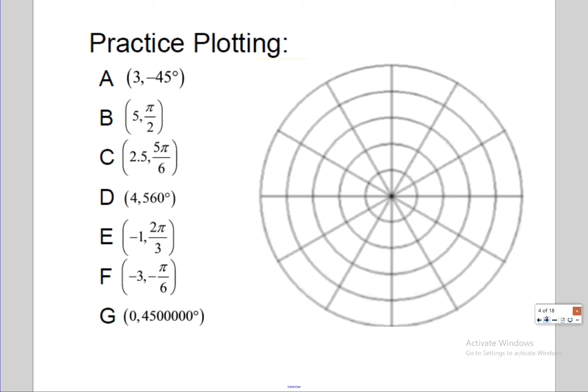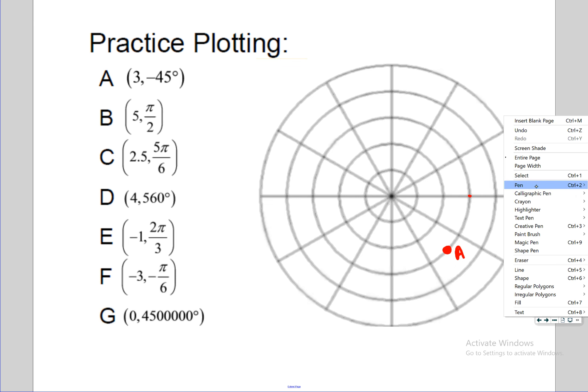Let's practice plotting some points on slide four. For point A: three, negative 45 degrees — positive r so go three to the right, then negative 45 degrees is clockwise, so go down 45 degrees. For point B: five and pi over two — go five to the right to the fifth circle, and pi over two equals 90 degrees, positive so rotate counterclockwise. Point B ends up at the top.